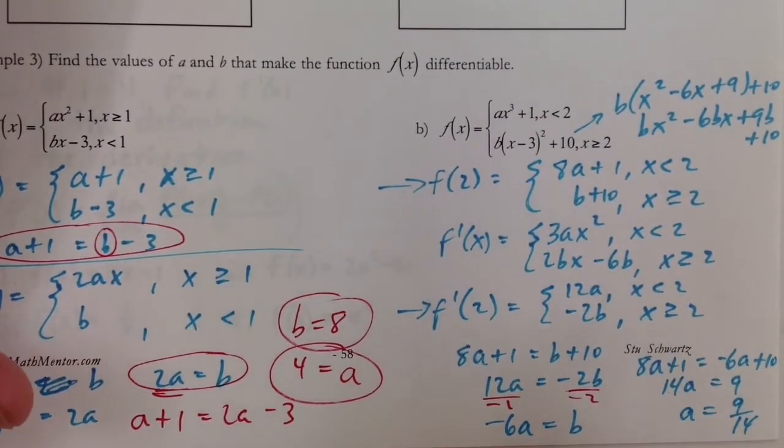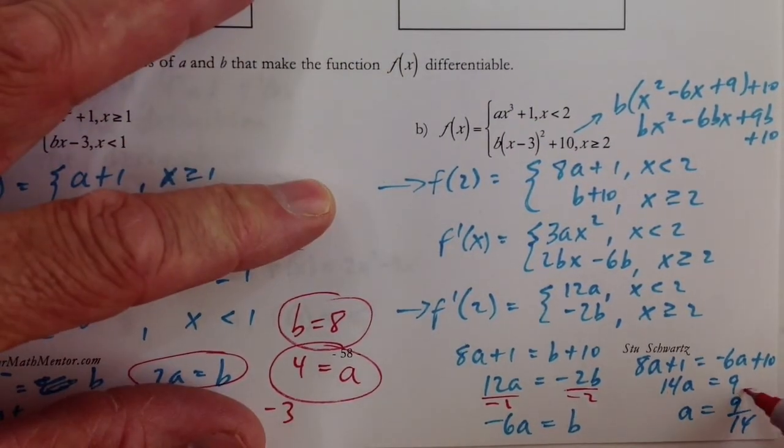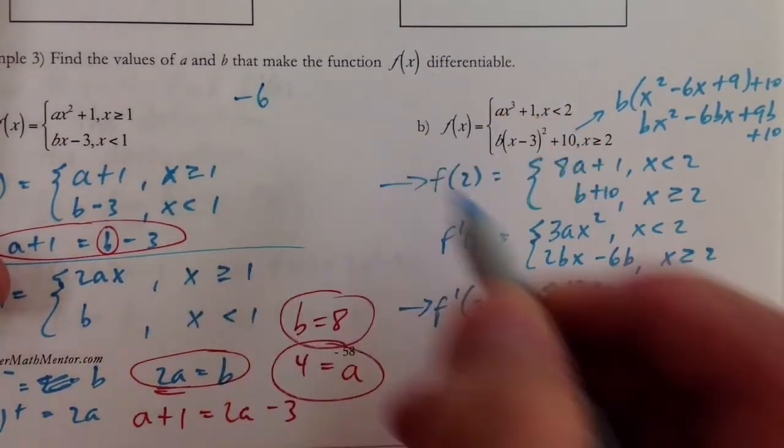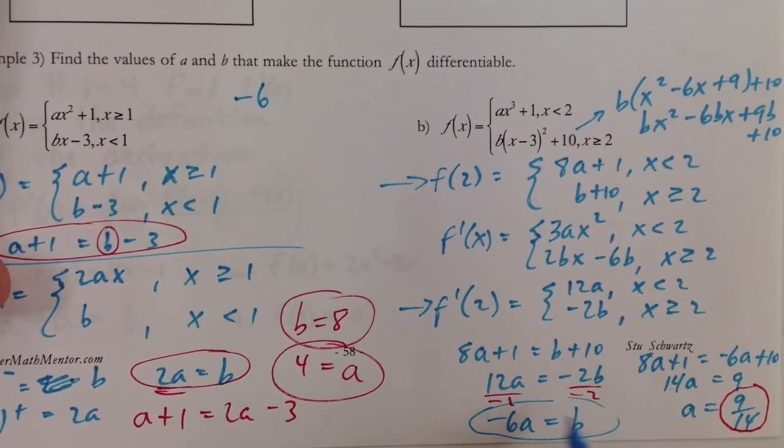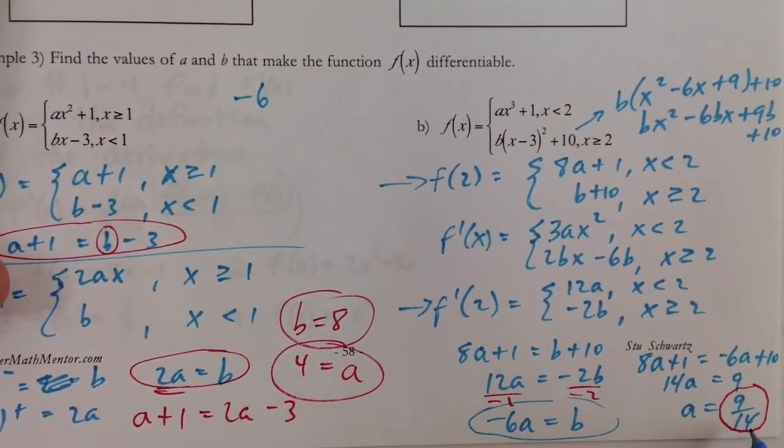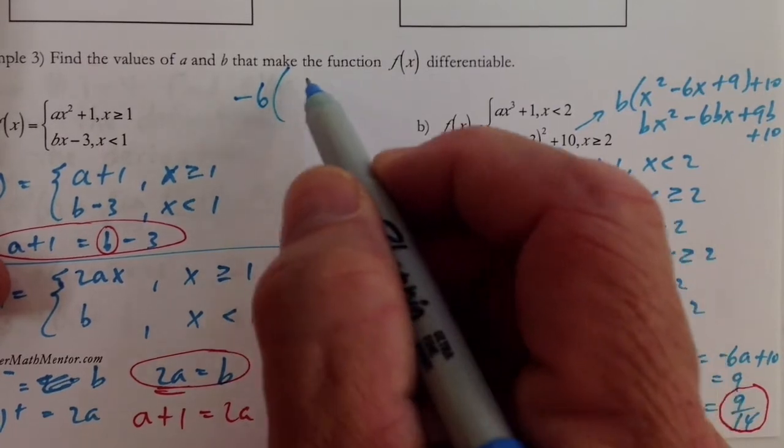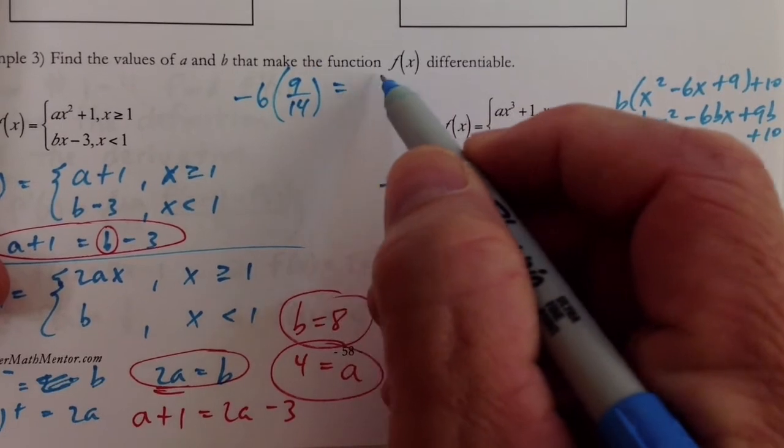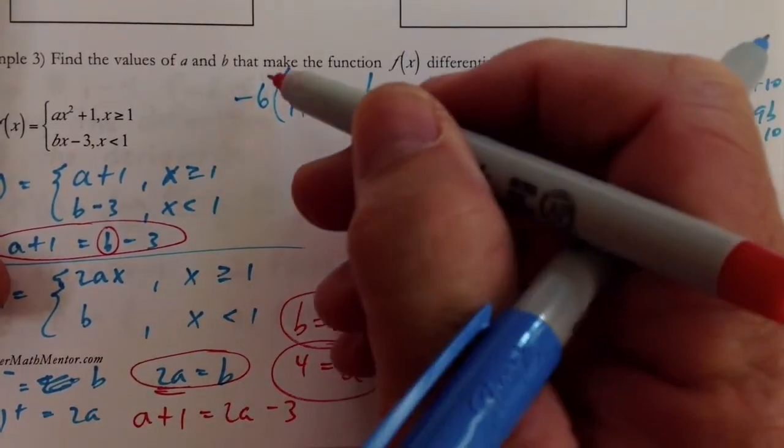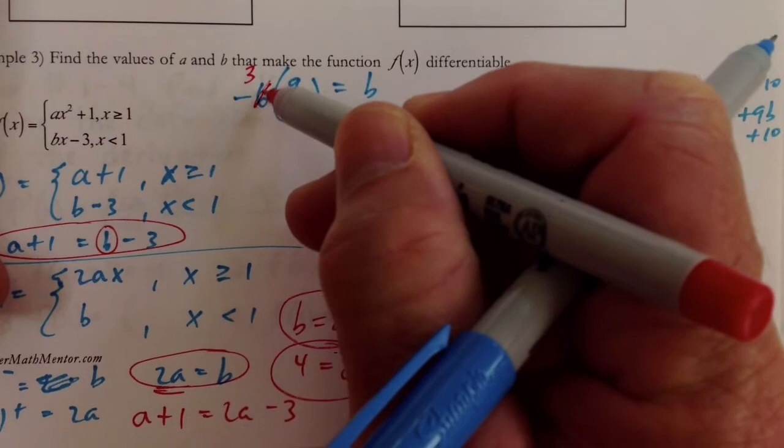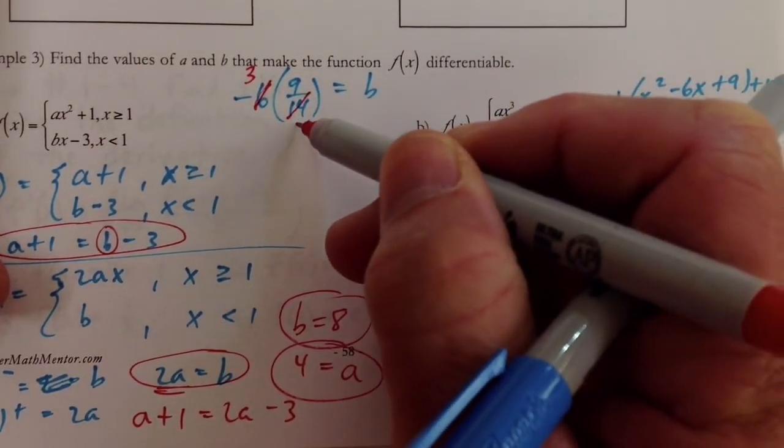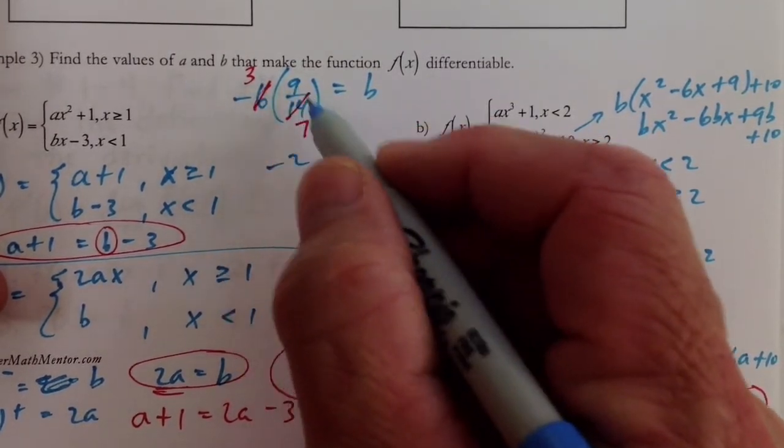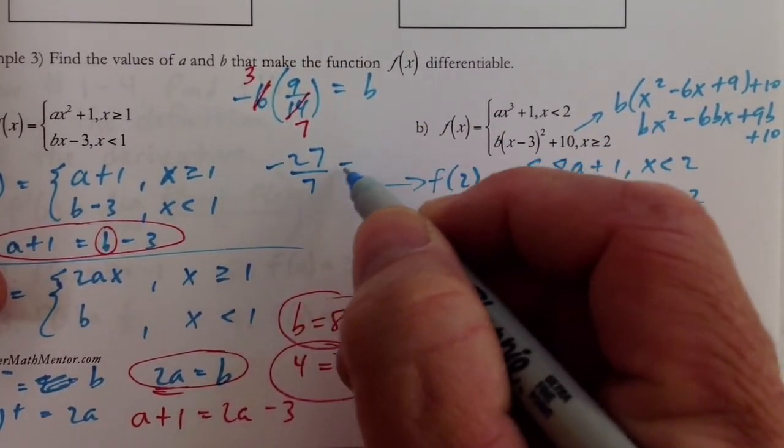I'm going to have to use this space over here, but I'm going to put a circle around that guy. I thought I'd have a little bit more room here. So negative 6, now I'm going to use this equation right here and replace a with 9 over 14. So we have negative 6 times 9 over 14 equals b. Well, 2 goes into 6 3 times, and 2 goes into 14 7 times, and so we get negative 27 over 7 is equal to b.